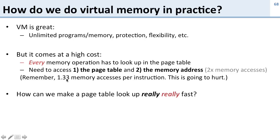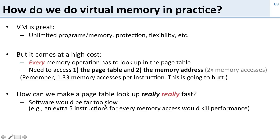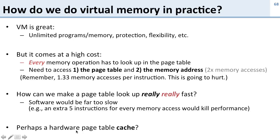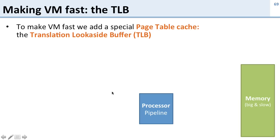Most of the time when we do a page table lookup it has to be basically instant — it can't slow down memory access. We can't do this in software; we can't afford an extra five instructions and a memory access for the translation. So we're going to have to do this in hardware — we're going to build a cache for the page table. To make virtual memory fast, we use what's known as a TLB: a page table cache called the translation look-aside buffer.